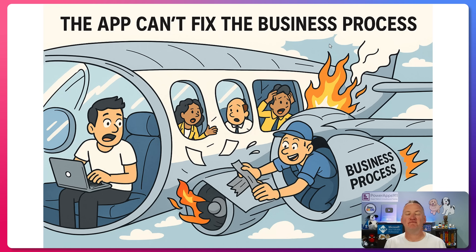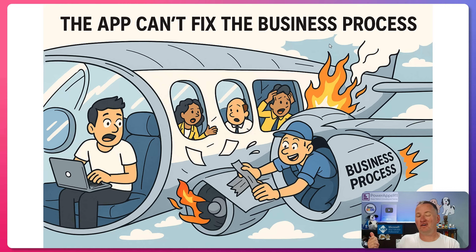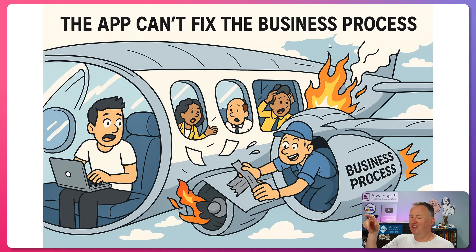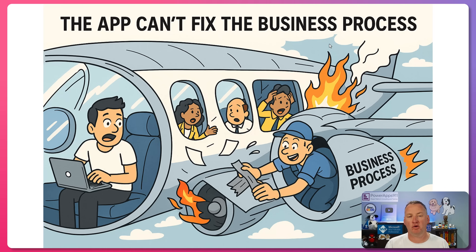The app can't fix the business process. We run into this all the time. People come to us and say, hey, I want you to build me a Power Apps app that does this. We ask: what does the existing process look like? And it either doesn't exist, is terrible, or yes, they have a business process, but Susie doesn't have to follow it, Timmy doesn't have to follow it, and Bob only has to follow it on Tuesdays. If you don't have a structured, repeatable business process, there's just no way you're going to successfully build a Power App, Power Automate Flow, or a Copilot Studio agent.